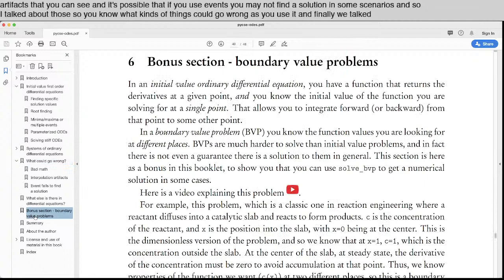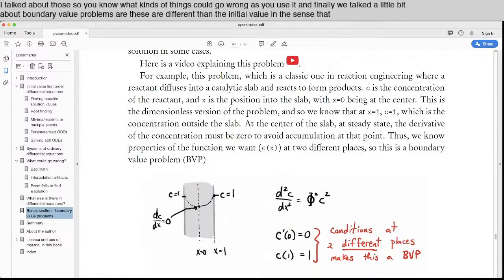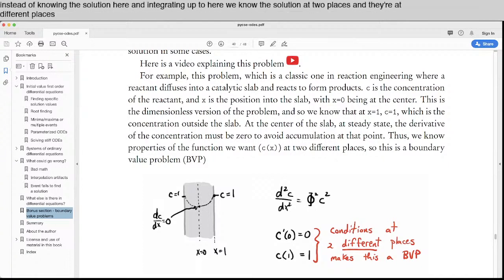And finally, we talk a little bit about boundary value problems. These are different than the initial value in the sense that, like in this example, instead of knowing the solution here and integrating up to here, we know the solution at two places. And they're at different places. And so there is a solve_BVP problem or function that you can use.